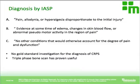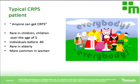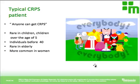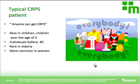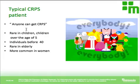Who can get CRPS? Essentially anybody — it's not a condition limited to a specific patient population. Anyone who suffers trauma or injury can develop CRPS. It appears to be rare in children and the elderly; children under age five don't seem to get it. The majority of people who tend to develop it are young individuals under the age of 40, and it is more common in women.